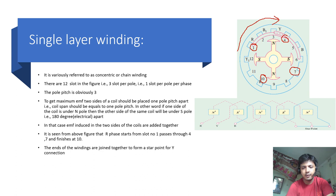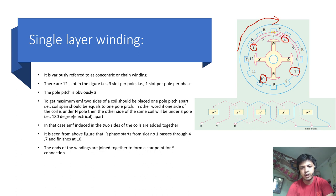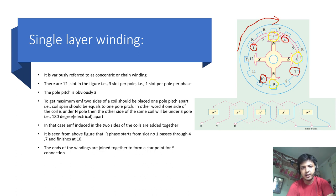Similarly, Y-phase starts 120 degrees electrical apart from R-phase. As 3 slots equal 180 degrees, 2 slots will be 120 degrees. So Y-phase starts from slot 3, goes through slot 6, then 180 degrees further to slot 9, and finishes at slot 12.